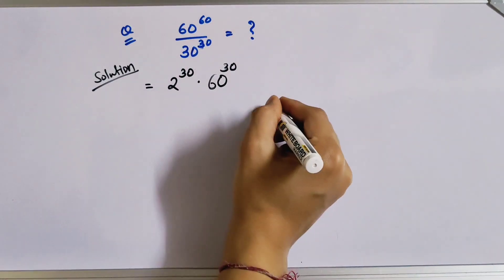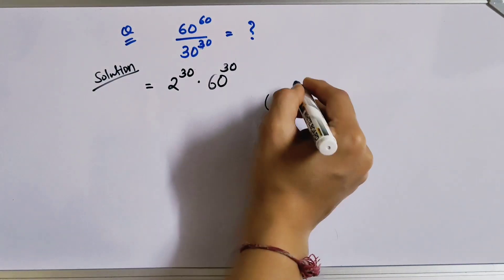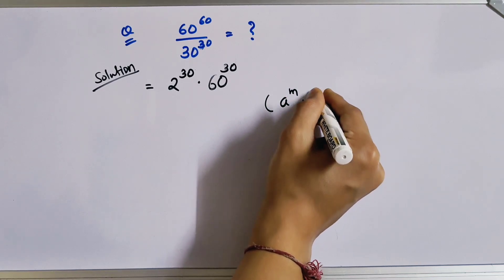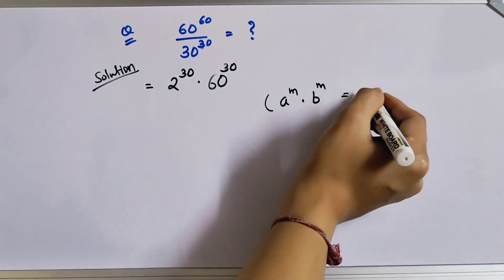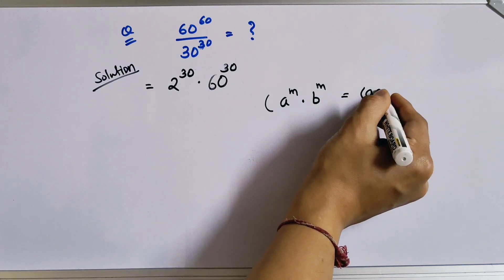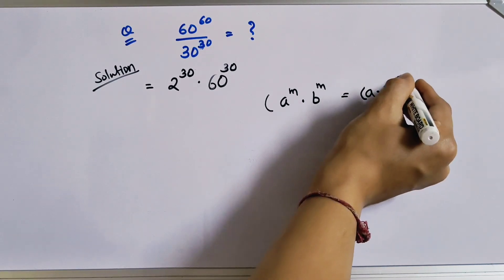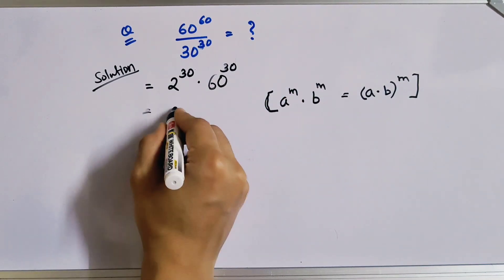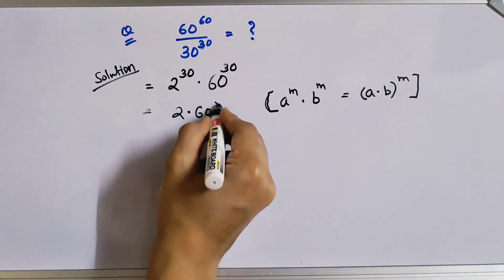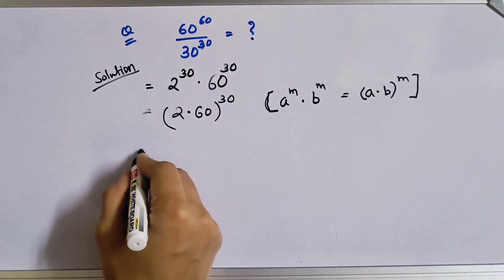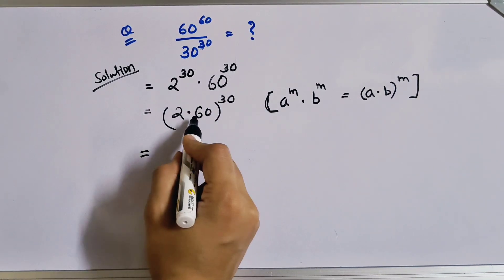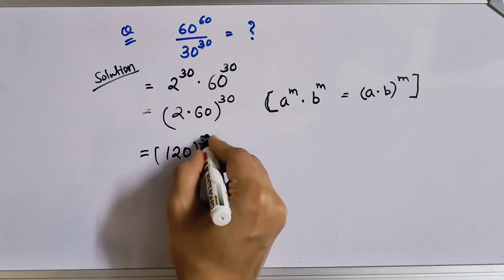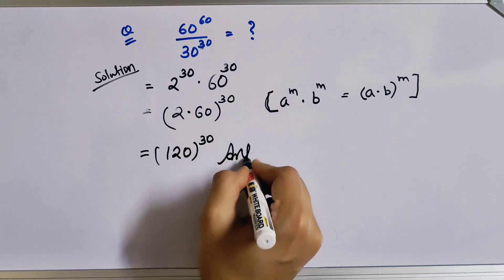Now we have another rule of exponents: a to the power m multiplied by b to the power m can be written as a times b, whole to the power m. So as per this rule we write 2 multiplied by 60, whole to the power 30, which gives us 120 to the power 30. This is our answer.